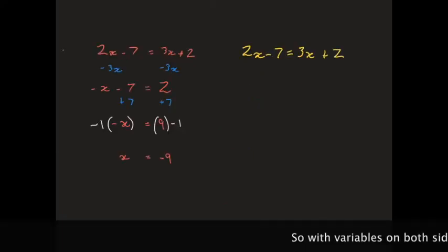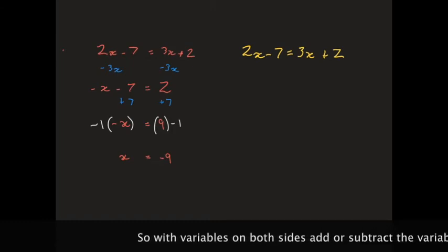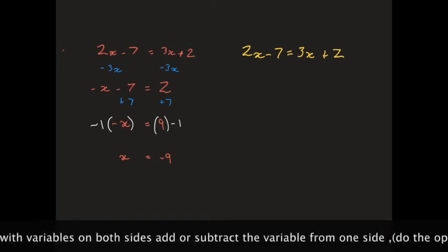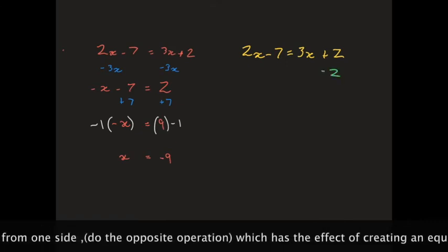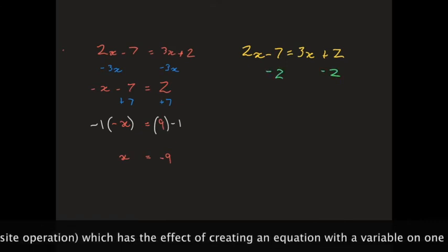Same sum, just a different way. Okay, this time I'm going to subtract 2 from both sides of the equation. So, on the right-hand side of the equation, 2 minus 2 will end up giving me 0.